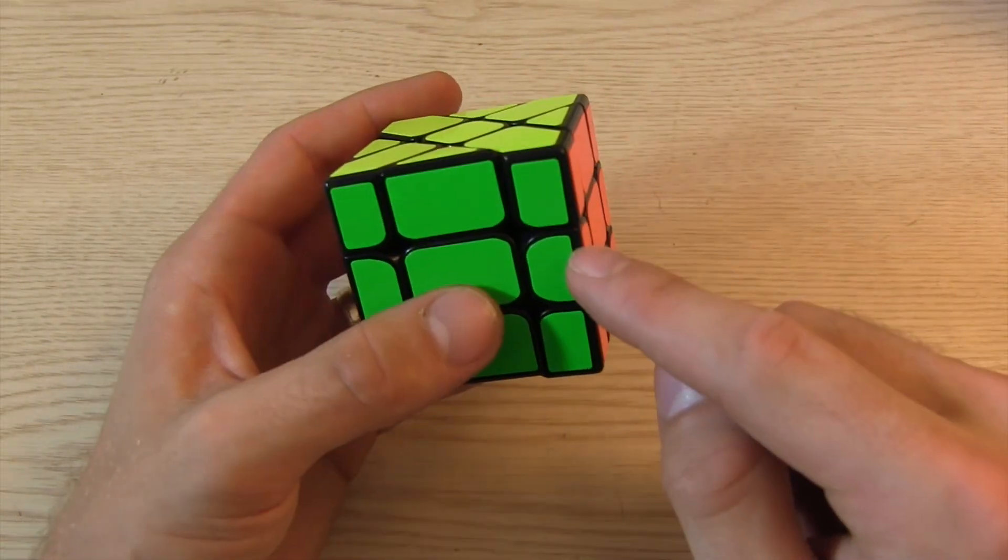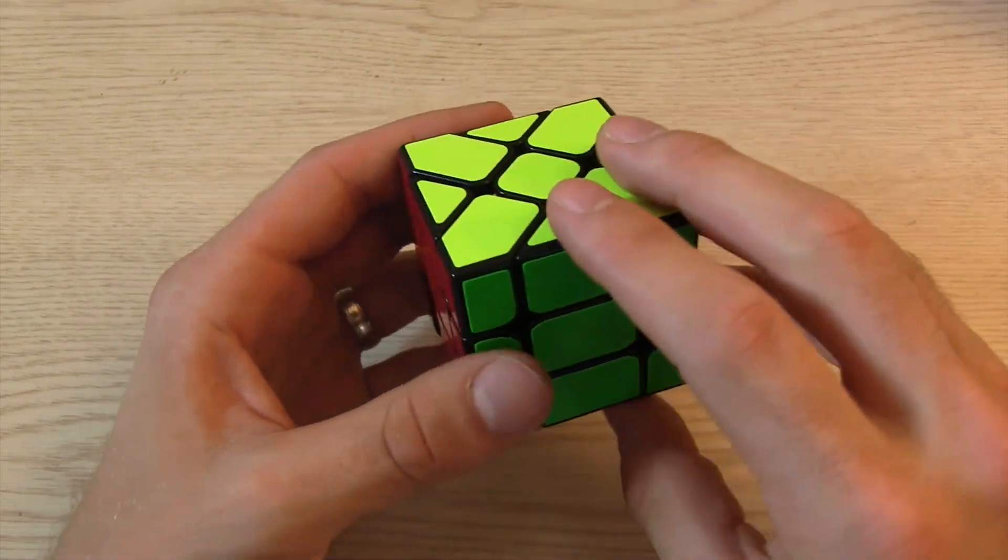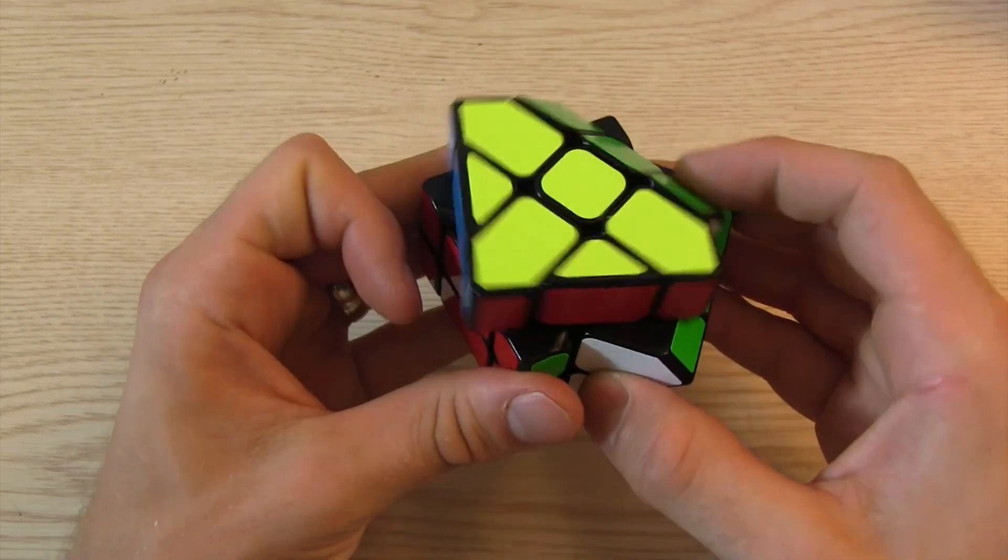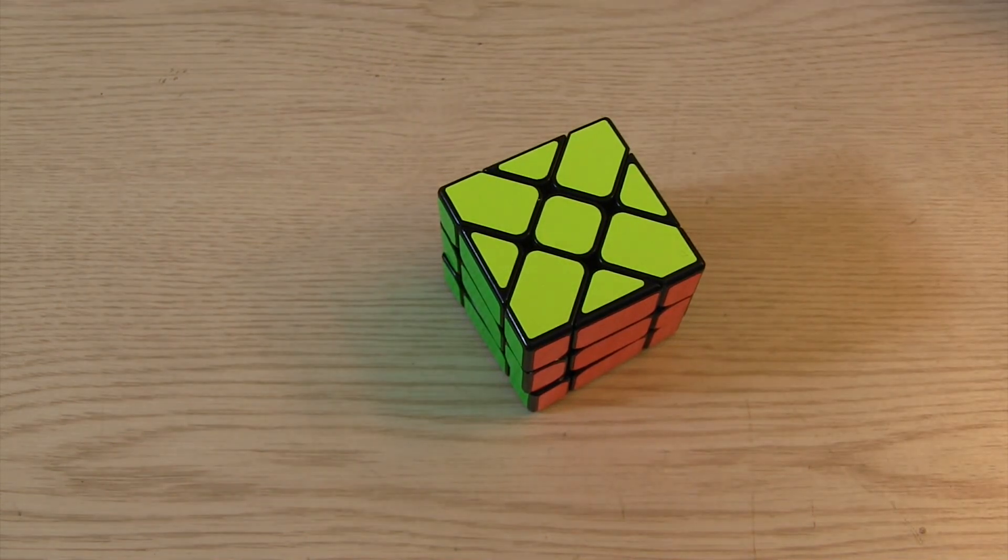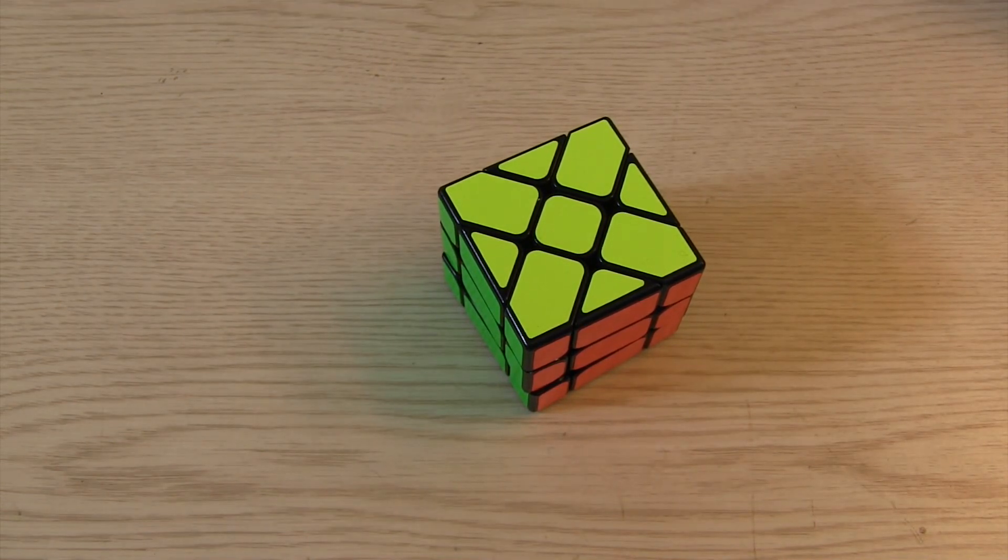And if you do a U permutation, the one that's the R U prime R U one, that will turn one of these centers 90 degrees. So hopefully this helps. Hit like, subscribe for more content like this in the future. And as always, stop by speedqpbu.com for more news and reviews.